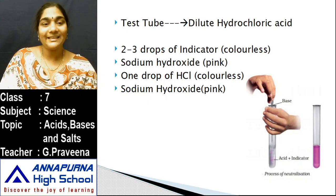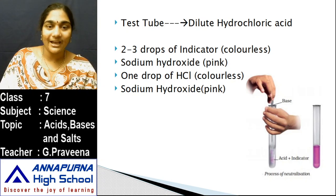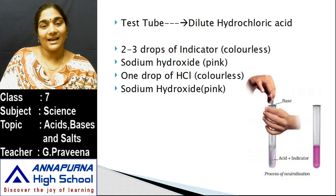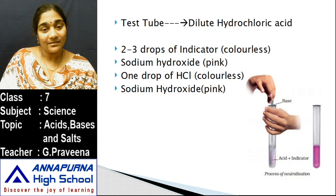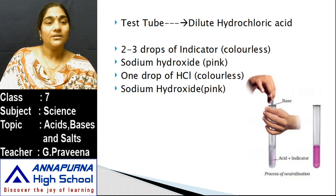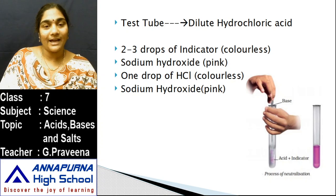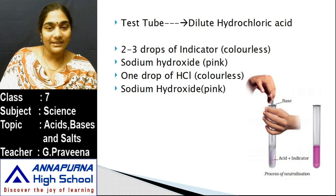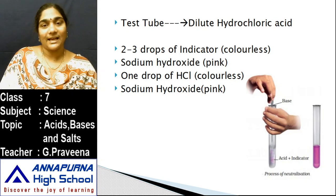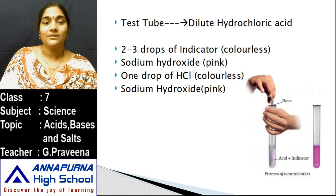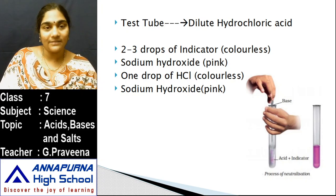Phenolphthalein remains colorless with an acidic solution. When hydrochloric acid is added again, the complete solution remains colorless. If you then add sodium hydroxide — a base — it changes color to pink again. So, phenolphthalein indicates acids by remaining colorless, and basic solutions turn it pink.